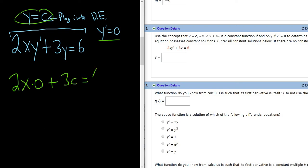and that's equal to 6. So this is 0 plus 3c equals 6. So c equals 2. So the answer is y equals 2.